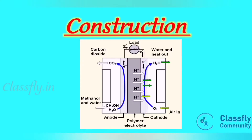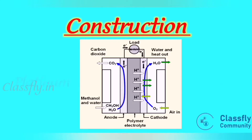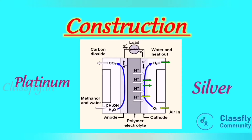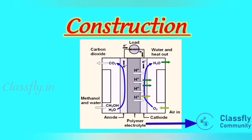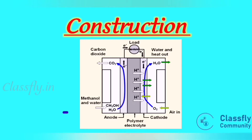In this picture we can see the methanol oxygen fuel cell consists of two porous carbon electrodes. The anode is coated with a platinum catalyst and the cathode is impregnated with a silver catalyst. The electrolyte is an aqueous solution of H₂SO₄, that is sulfuric acid.